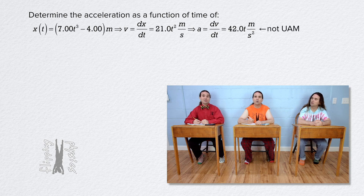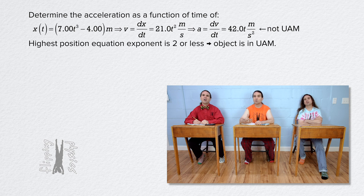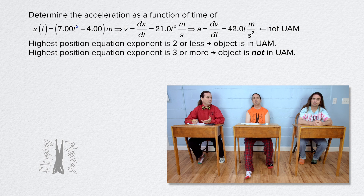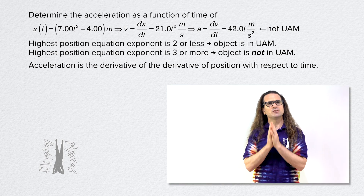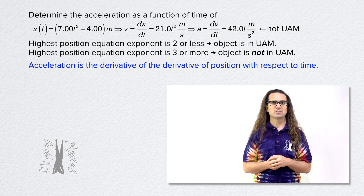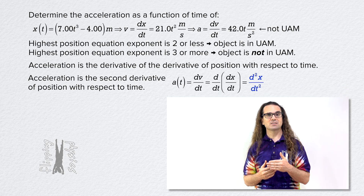This is not uniformly accelerated motion, because the acceleration is not constant — it changes as a function of time. You can tell from just looking at the position equation whether an object is experiencing uniformly accelerated motion: if the highest exponent in the position equation is 2 or less, the object is experiencing uniformly accelerated motion; if the highest exponent is 3 or more, it is not. Because acceleration is the derivative of the derivative of position — the second derivative of position with respect to time — written as d²x/dt².